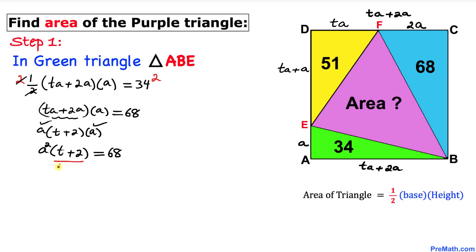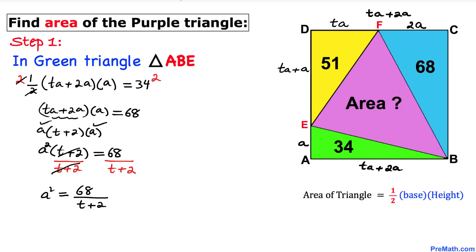Isolating a squared, we divide both sides by (t + 2), so a squared equals 68 divided by (t + 2). Let's call this Equation 1.